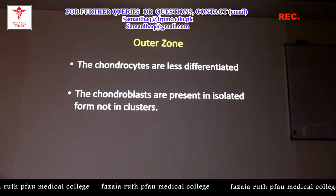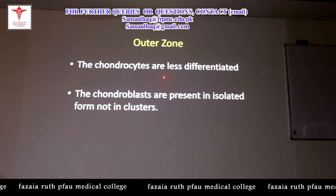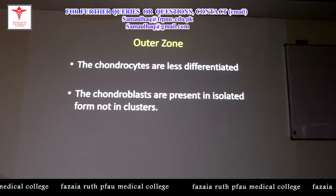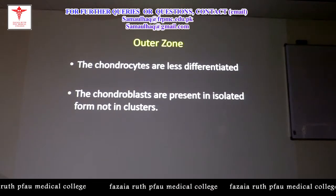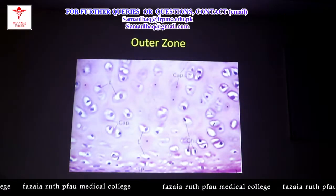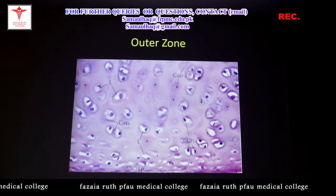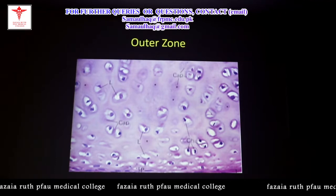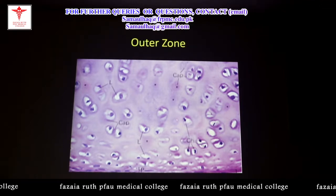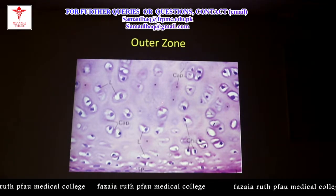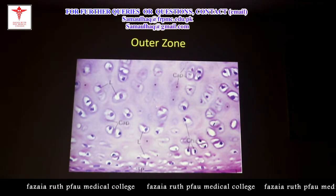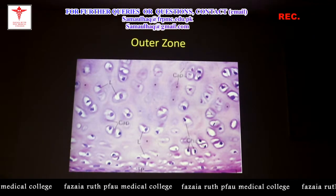In the outer zone, the chondrocytes are less differentiated compared to the inner zone. The chondroblasts are present in isolated form, not in clusters. They are present in isolated forms mainly in the periphery, and the population of chondroblasts is less in the outer zone as compared to the deeper inner side.